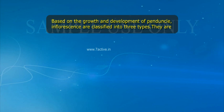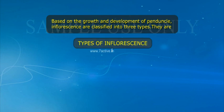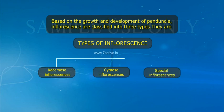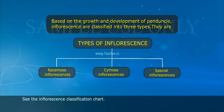Based on the growth and development of the peduncle, inflorescences are classified into three types: 1. Racemose inflorescence, 2. Cymose inflorescences, and 3. Special inflorescences. See the inflorescence classification chart.